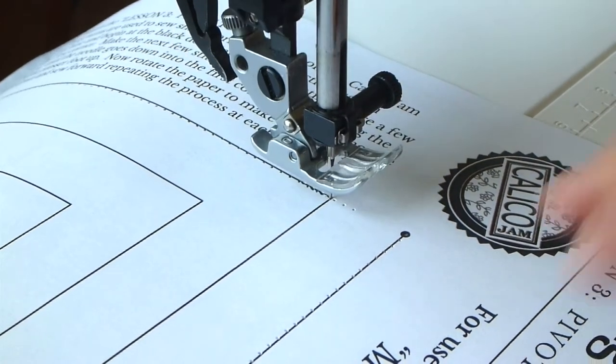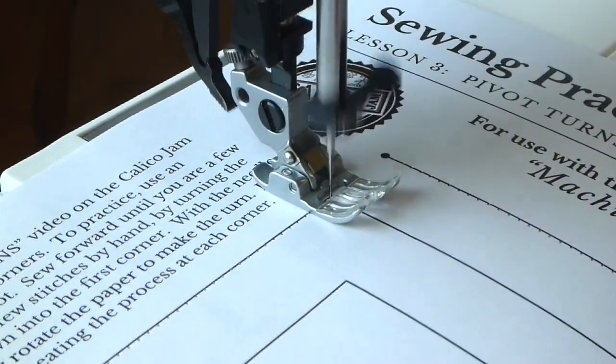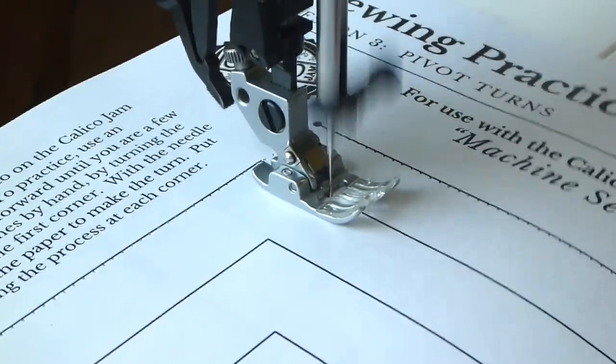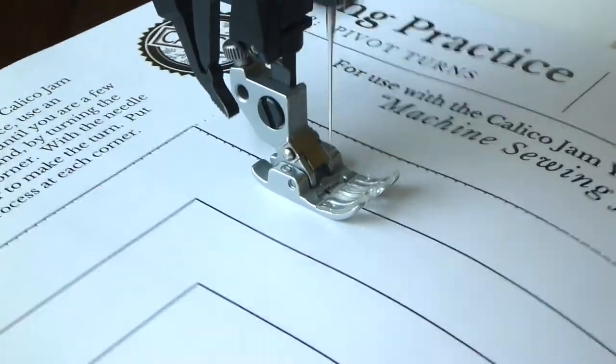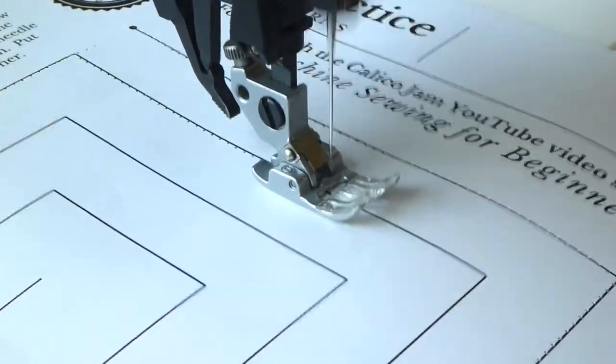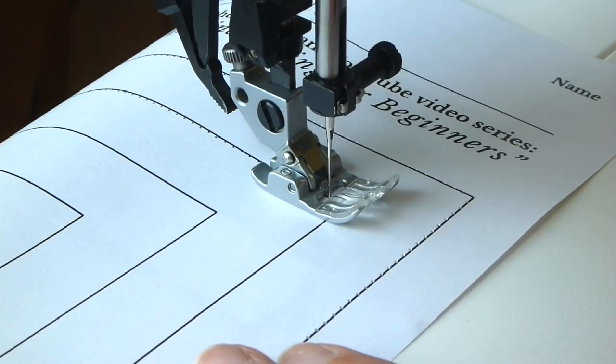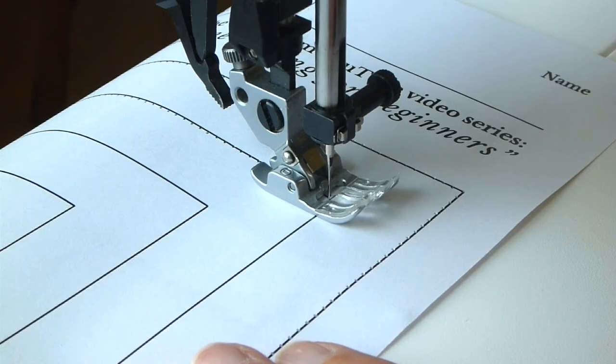It is okay if you do not get the needle exactly in the corner as long as it is close. Sometimes you may be a little ahead of the corner, but if you take another stitch you will be a bit after it. As long as you are within half the stitch length of the corner, it is fine.